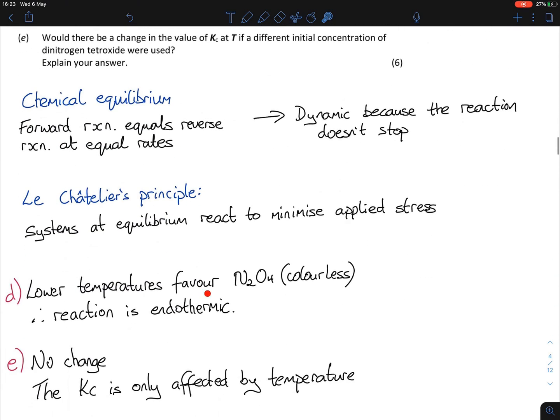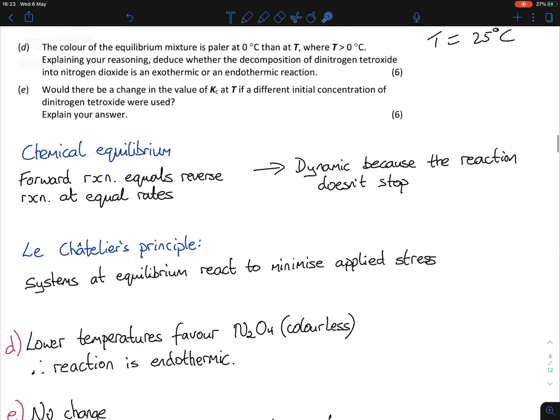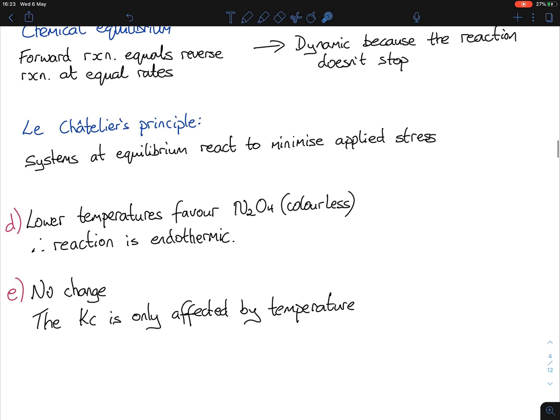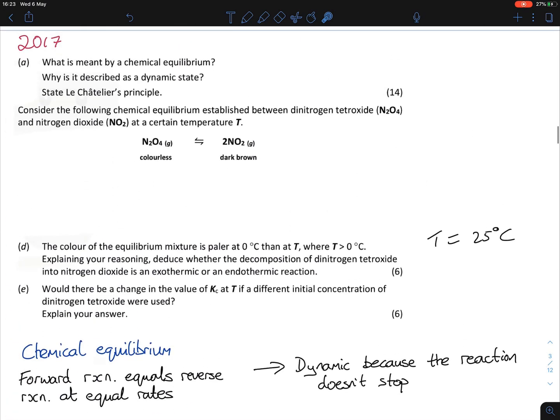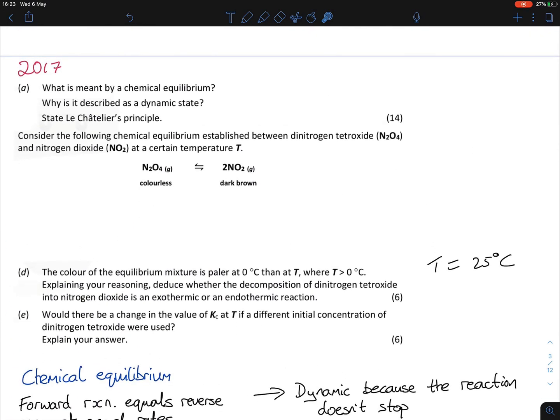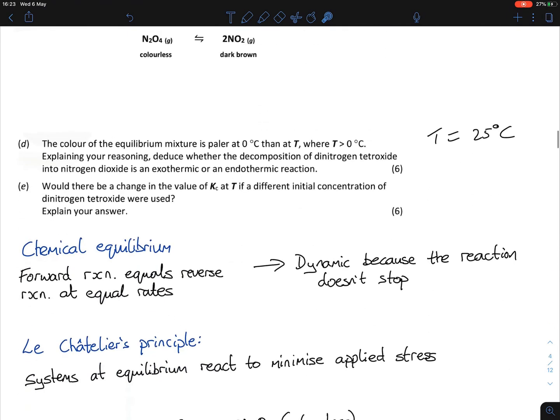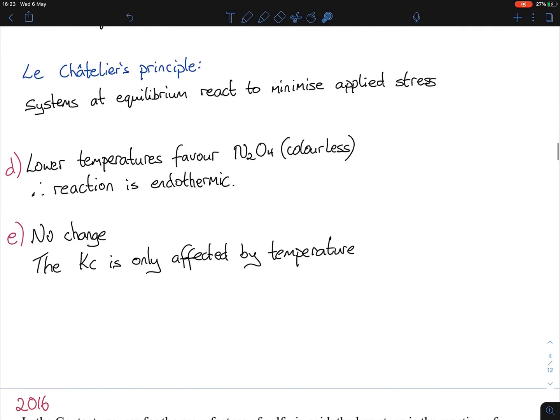Lower temperatures favor the N2O4, the reactant side, so therefore the reaction is endothermic. Lower temperatures that favor the reactant side are automatically classed as endothermic, whereas lower temperatures that favor the product side are exothermic. Part E: Would there be a change in the value of Kc at T if a different initial concentration of dinitrogen tetroxide were used? No change. The Kc is only affected by temperature. Concentration, pressure, and catalysts have no effect on Kc.